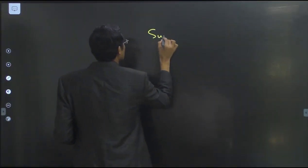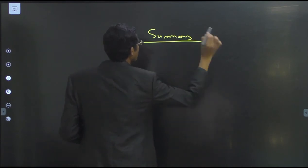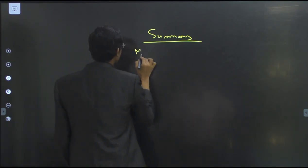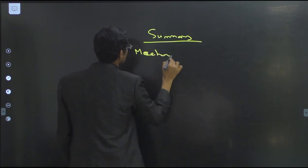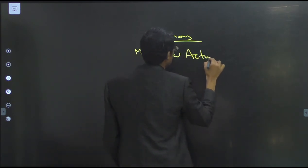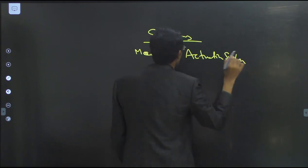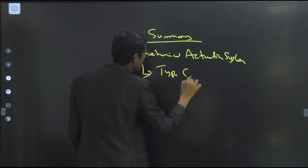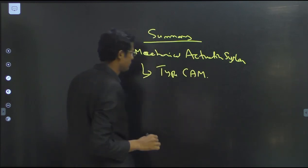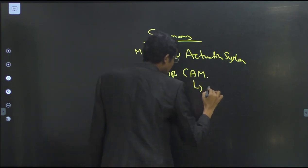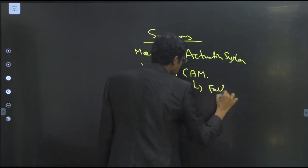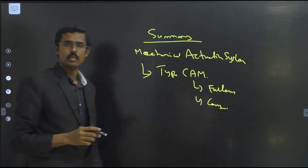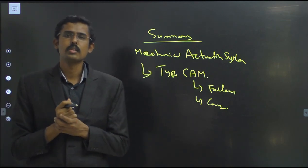In summary, in today's class we have seen about mechanical actuating systems. We have seen the various types of cams and classifications based upon followers and cam mechanisms. The remaining part of the subject will be covered in the next session.